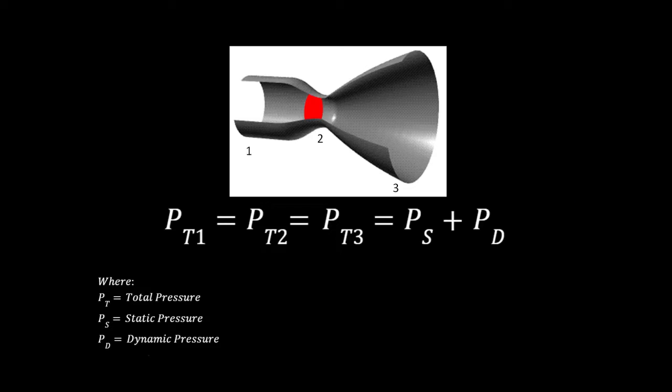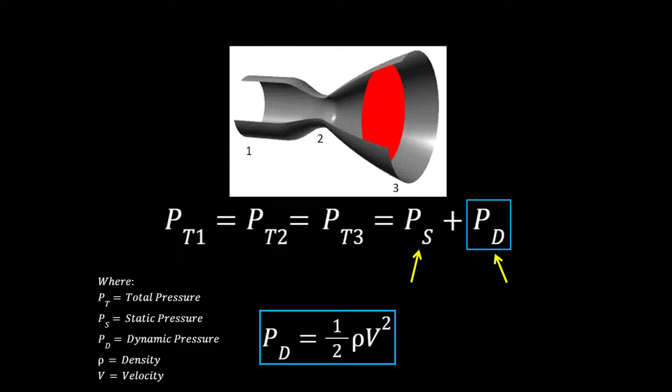Bernoulli's theorem simply states that within a closed system the total pressure is the same at any given point but the amount each of its two components, static pressure and dynamic pressure, contributes will vary. As we move from point 1 to point 2 the area decreases and as we just saw the velocity of the air will increase so our dynamic pressure will increase and our static pressure will decrease.